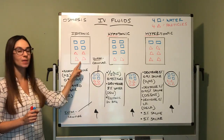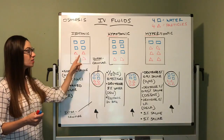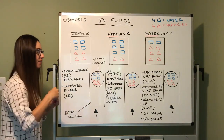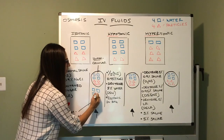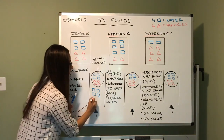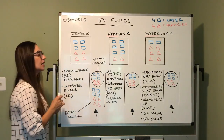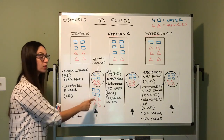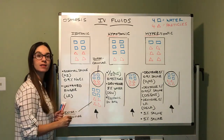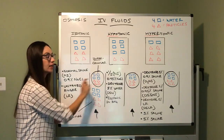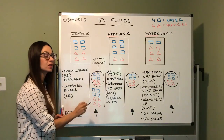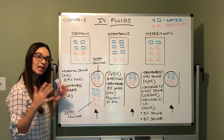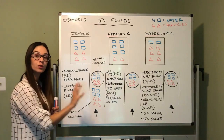Isotonic directly mimics our normal bodily fluid. When we transfuse this in, we have four water to four particles. Is the concentration of fluid and particles inside my cell equivalent to the concentration outside my cell or in my extracellular space? They are equal. There will be no shifting of water into the intracellular space and no shifting from the intracellular space to the extracellular space. When you give an isotonic solution, it will stay in those vessels — it will stay in the vein or artery you are infusing it into.